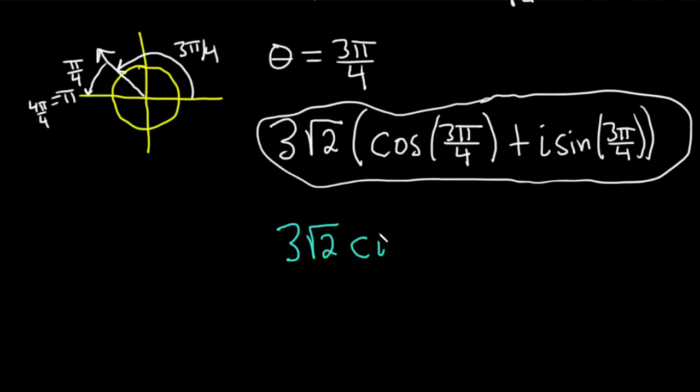cis, C-I-S, stands for cosine I sine, 3 pi over 4. Or cosine I sine of 3 pi over 4 is cosine 3 pi over 4 plus I sine 3 pi over 4. Or, you can write it another way. Why not?